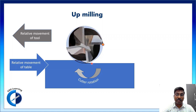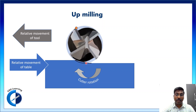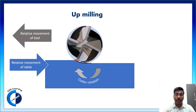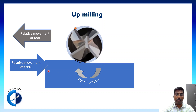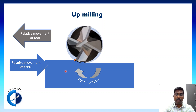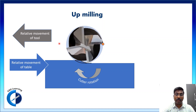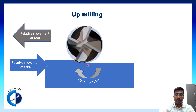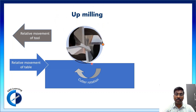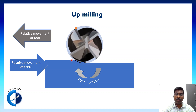In up milling, the chip is thinner in the beginning and thicker at the end. The relative movement of the table and the cutter rotation are in opposite directions — that is what makes it up milling. So the chip thickness is less in the beginning and high at the end of the cut.